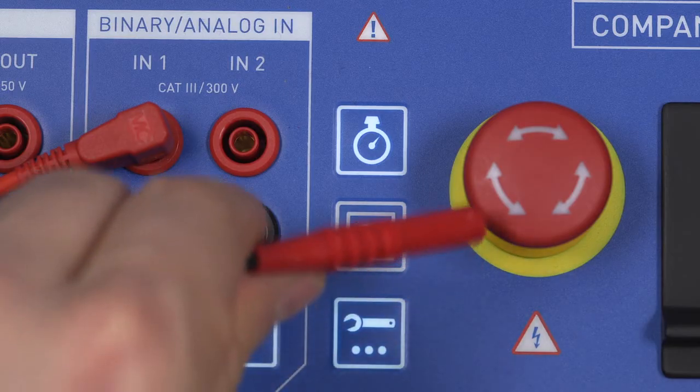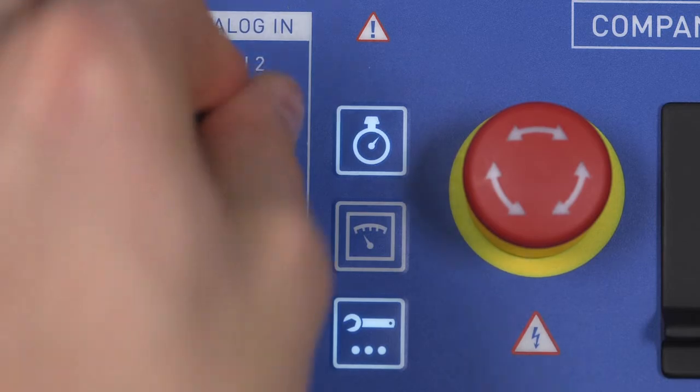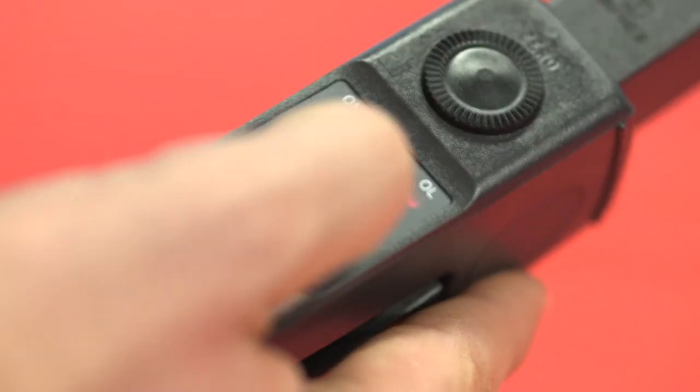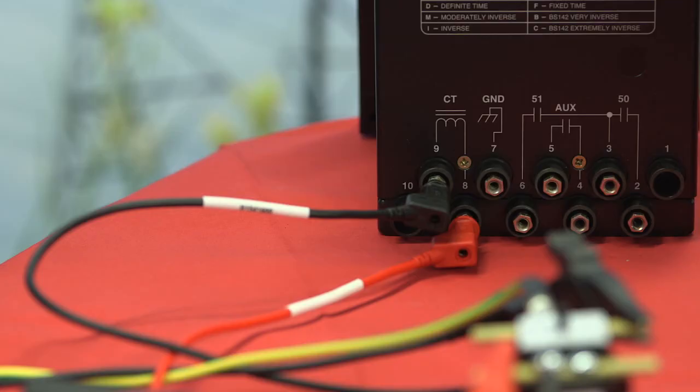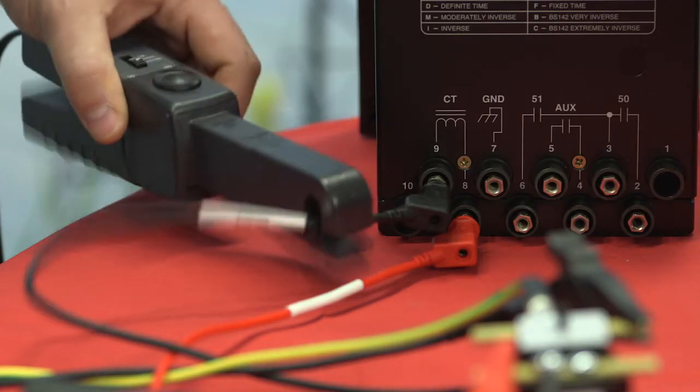Connect the current clamp to IN2. Set the clamp to 100 millivolts per amp and apply it to one of the secondary wires leading to the relay.